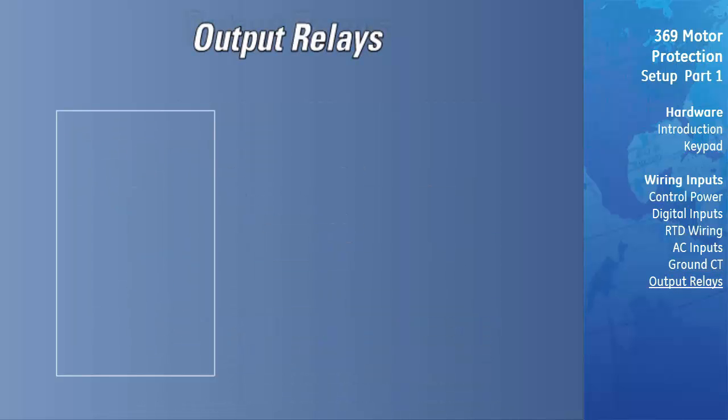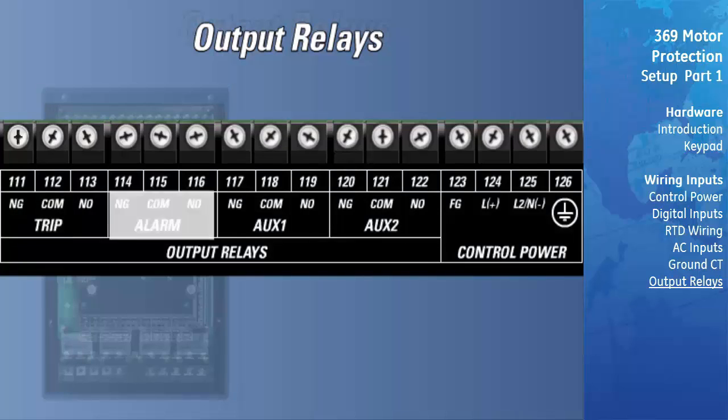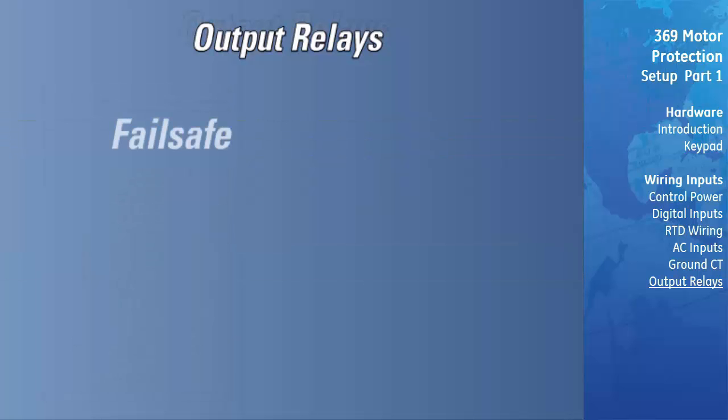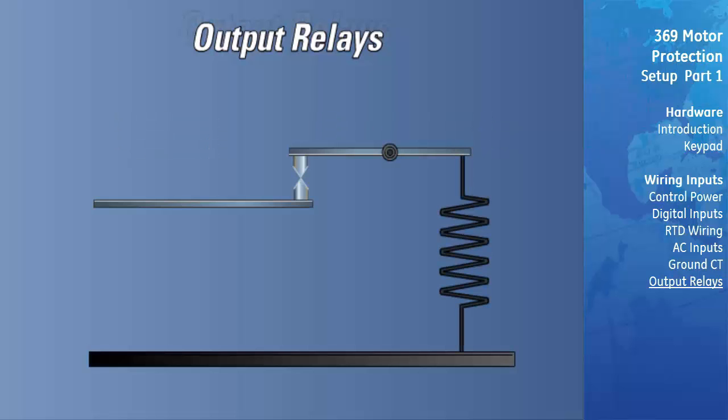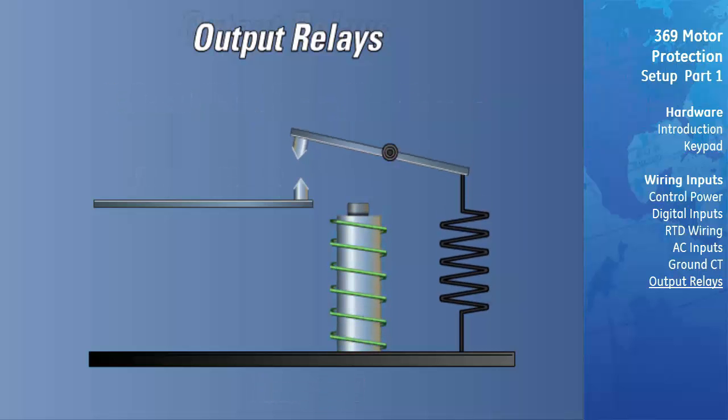The 369 provides four Form C relay outputs: the TRIP, ALARM, AUX1 and AUX2 outputs. Each relay can switch up to 8 amps at either 250 volts AC or 30 volts DC into a resistive load. All four output relays may be programmed for fail-safe or non-fail-safe operation. GE Multilin defines a fail-safe relay as a relay that is normally energized and de-energizes when called upon to operate. It will also de-energize when the 369 plus control power is lost.